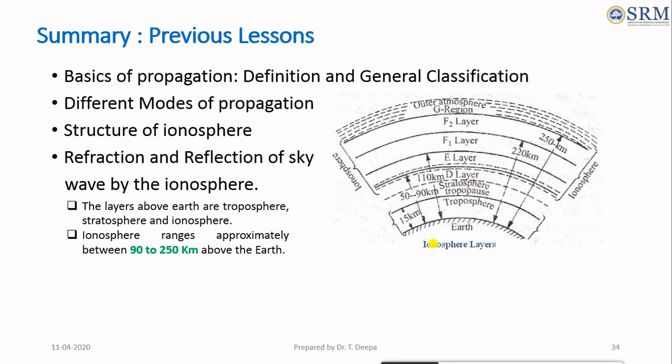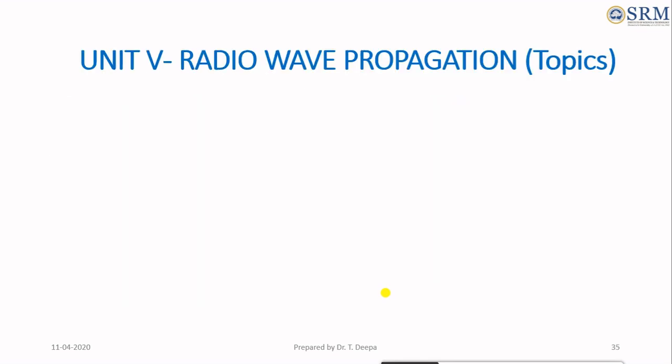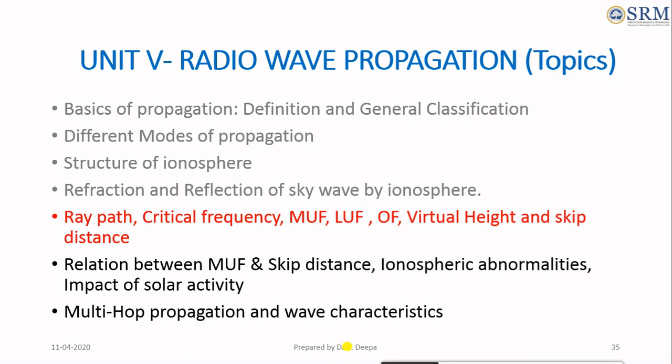The figure shows the ionospheric layers above the earth. The layers above the earth are troposphere, stratosphere, and ionosphere. Here, ionosphere ranges approximately between 90 to 250 kilometers above the earth. In this class, we will see about some important key factors within the high frequency propagation in communication links.